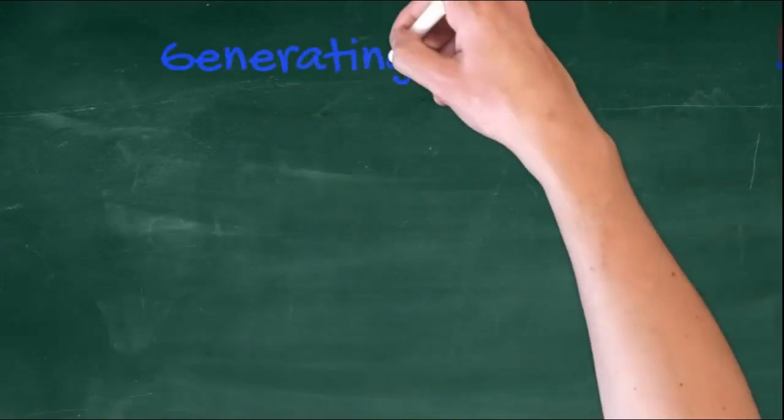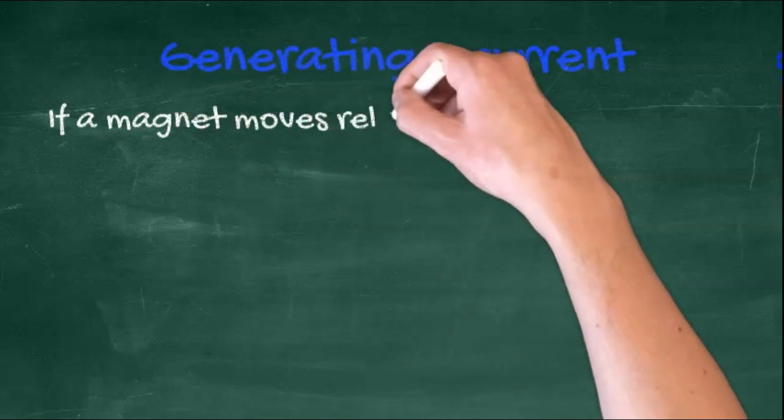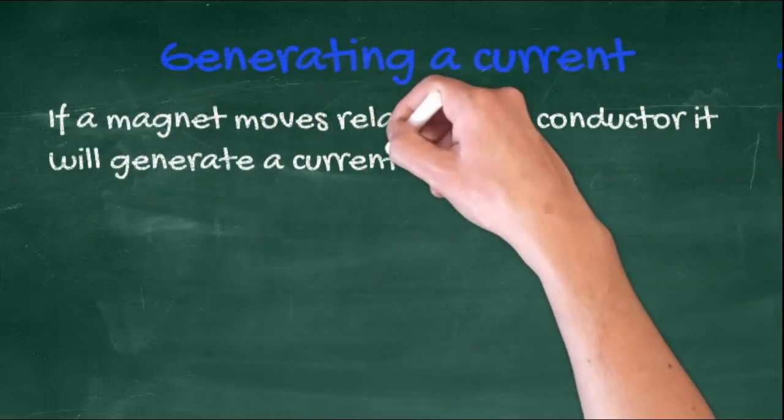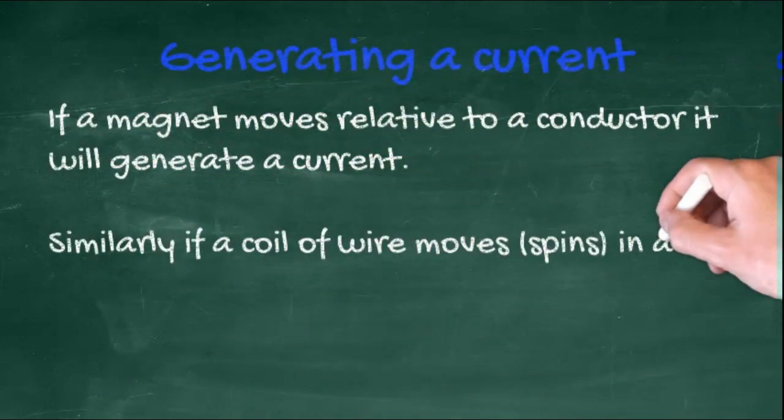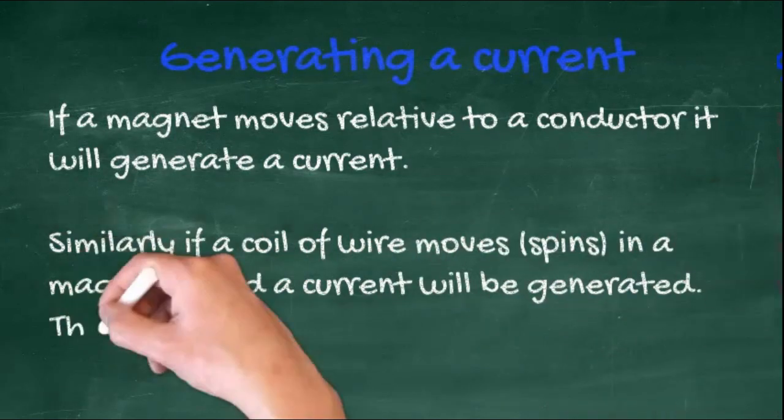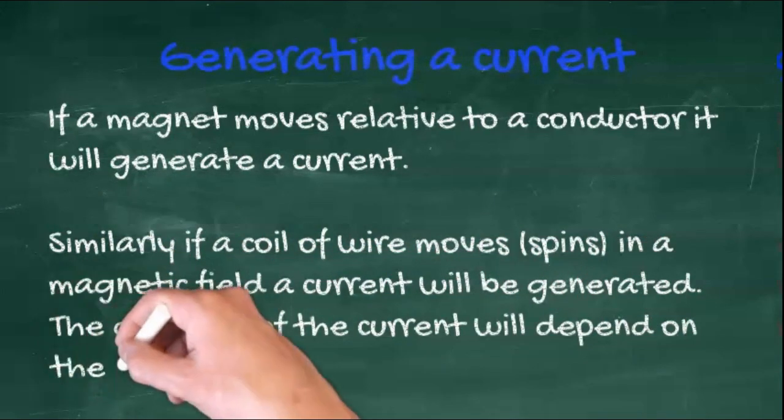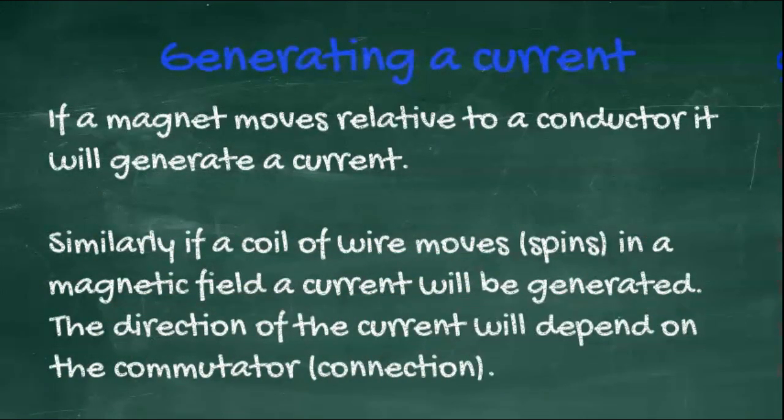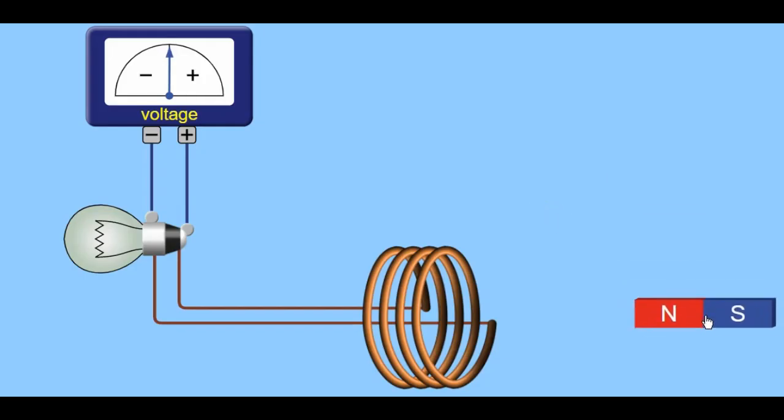Generating a current. If a magnet moves relative to a conductor, it will generate a current. Similarly, if a coil of wire moves or spins in a magnetic field, a current will be generated. The direction of this current, whether AC or DC, will depend upon the commutator.